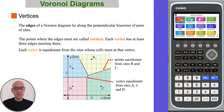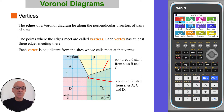The edges of a Voronoi diagram lie along the perpendicular bisectors of pairs of sites. The points where the edges meet are called vertices, and each vertex has at least three edges meeting there. Each vertex is equidistant from the sites whose cells meet at that vertex.